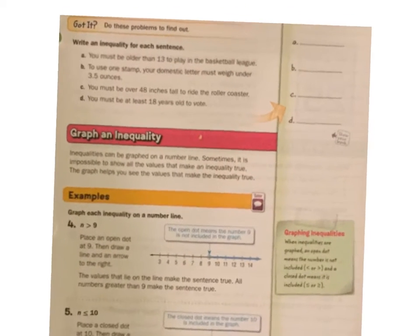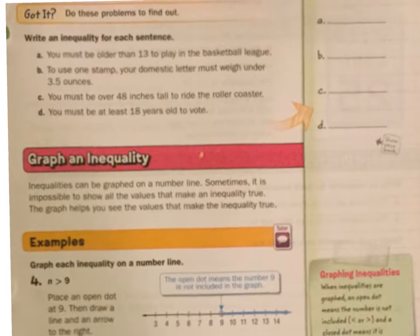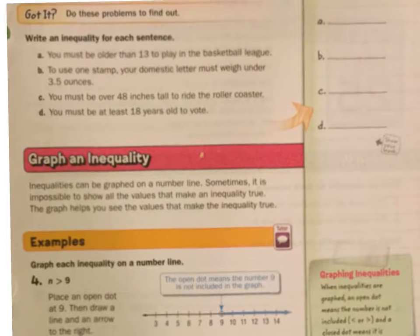Let's look at a few of these. You can just kind of listen to me as I go through these. I know it's kind of not the best clarity here. A. You must be older than 13 to play in the basketball game. Okay, so I'm going to say A is age. Age must be greater than 13. Now it's not equal to 13 because you have to be older than, not at least 13, but you have to be older than 13.